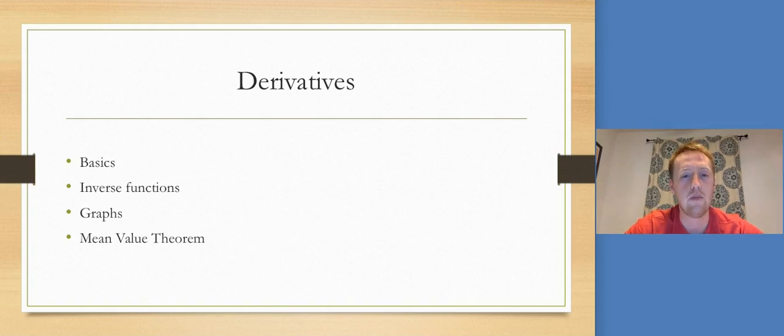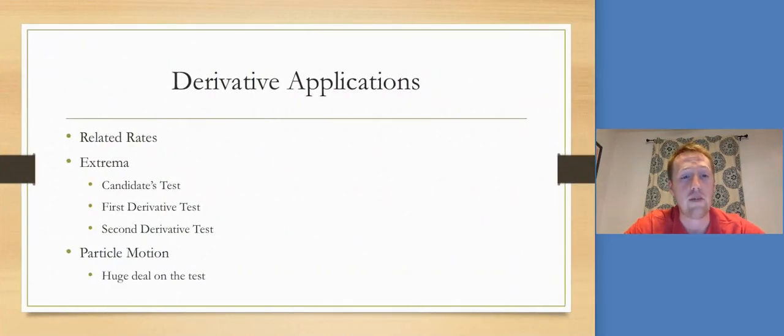Some derivative application ideas that come up all the time: related rates with the implicit differentiation when we differentiate with respect to time, that always comes up. Extrema, so during our candidates test, our first derivative test and second derivative test. I don't see the second derivative test come up that often but first derivative test and candidates test definitely are there. And then particle motion is a huge deal on the test.